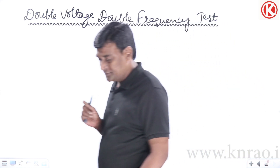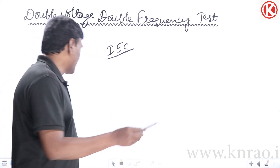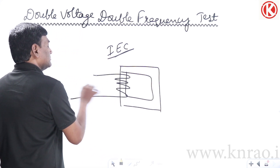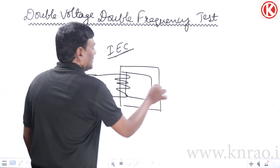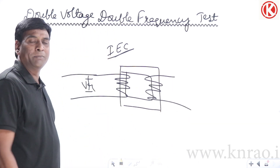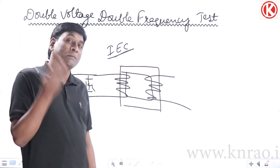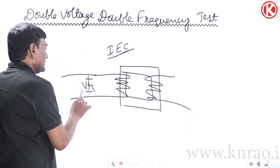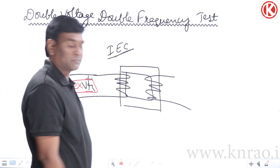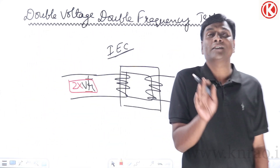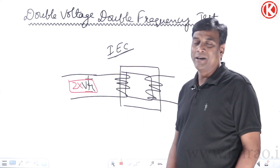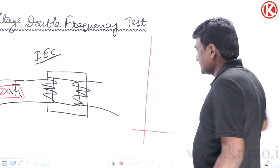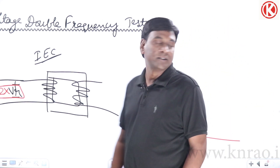Now consider our transformer: the supply voltage is the rated voltage V-rated. There will be no load on the secondary side because this test is only to test the insulation. So on the primary we are going to apply double the rated voltage — two times the rated voltage. But if we maintain the same frequency when doubling the voltage, what will happen?